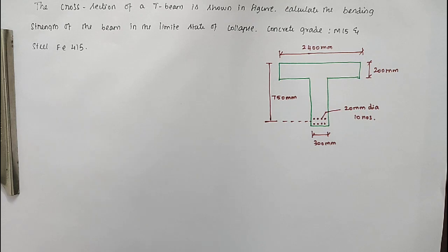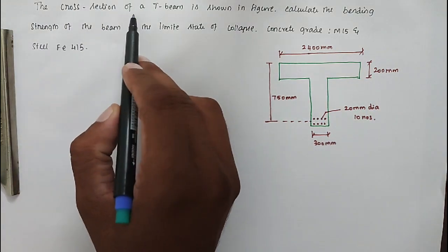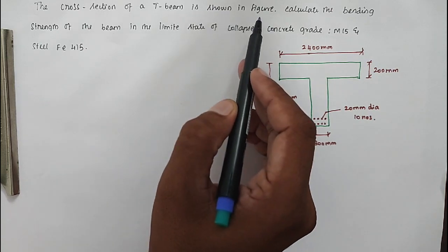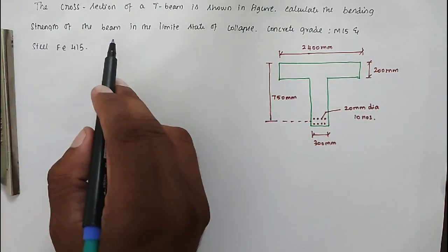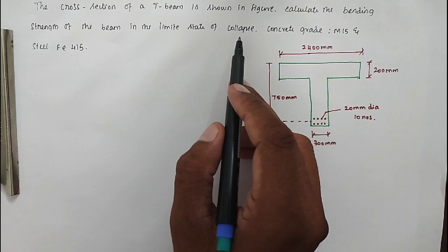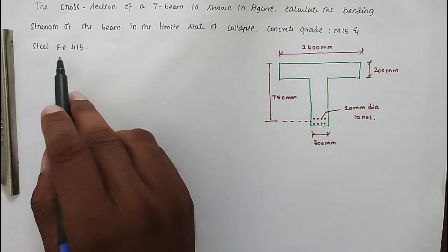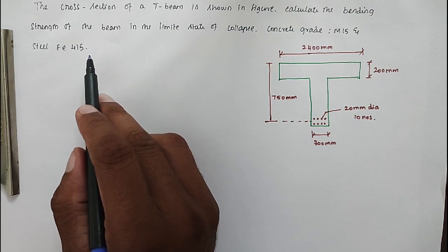In the topic of T-beam, the problem is: the cross section of T-beam is shown in figure. Calculate the bending strength of the beam in the limit state of collapse. Concrete grade is M15 and steel grade is Fe415.